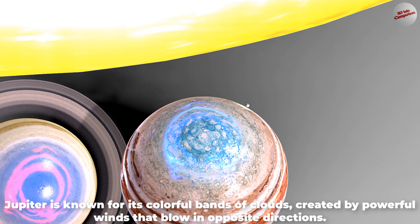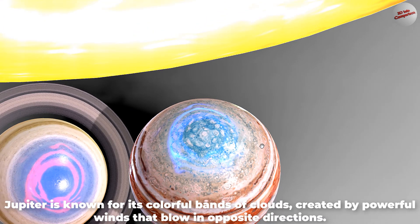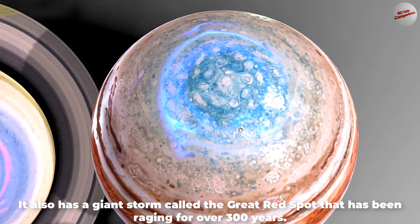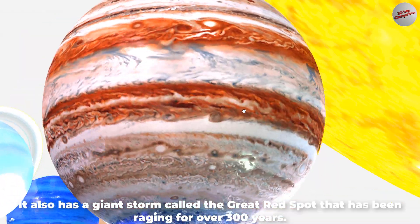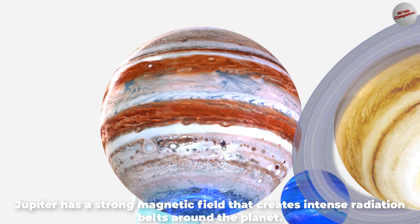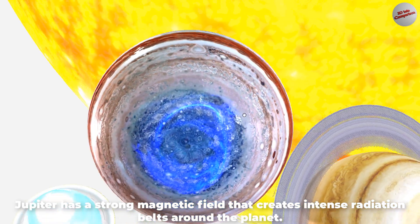Jupiter is known for its colorful bands of clouds, created by powerful winds that blow in opposite directions. It also has a giant storm called the Great Red Spot that has been raging for over 300 years. Jupiter has a strong magnetic field that creates intense radiation belts around the planet.